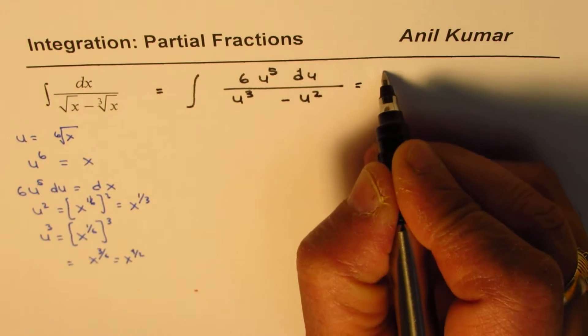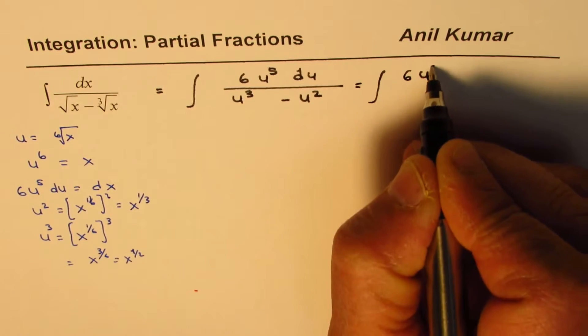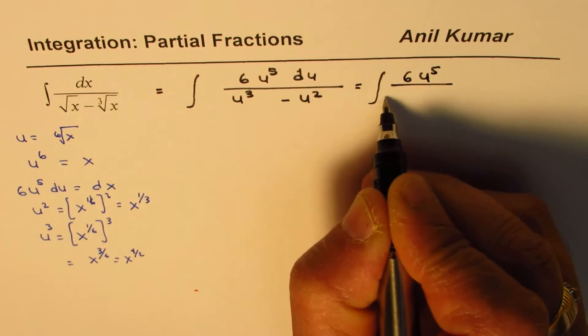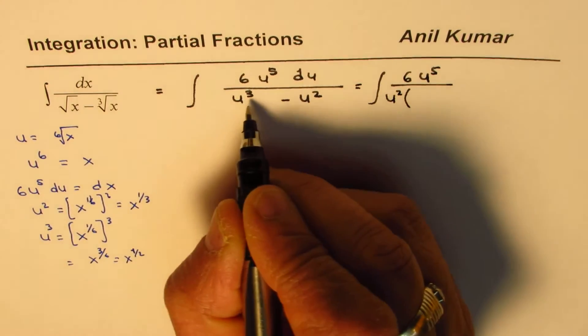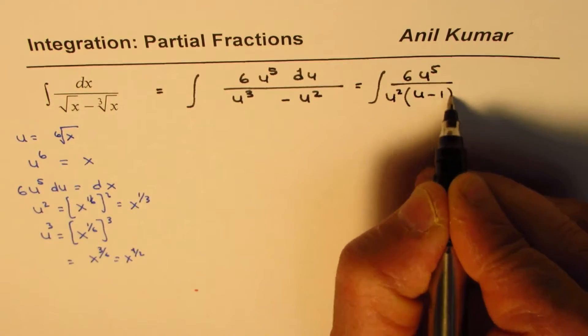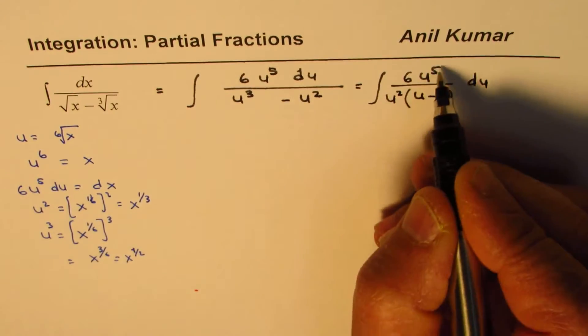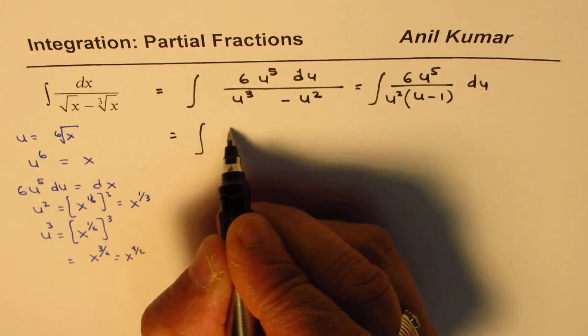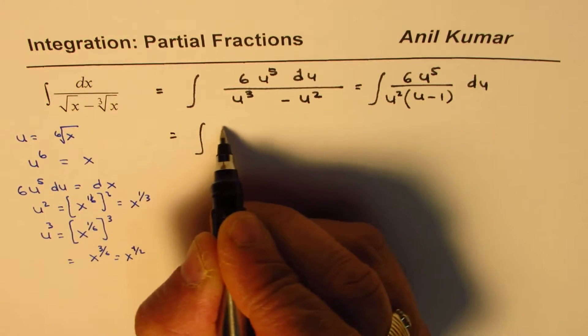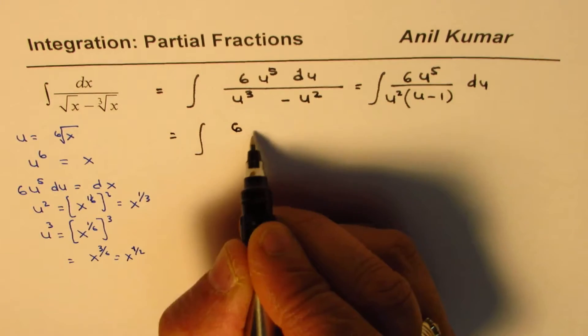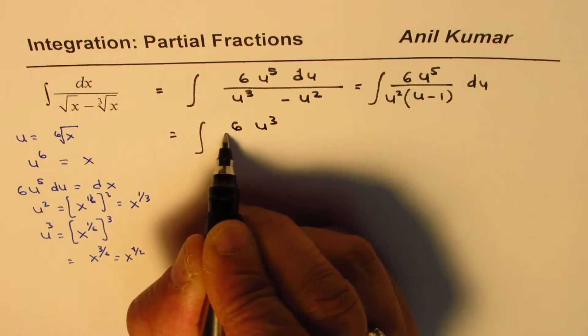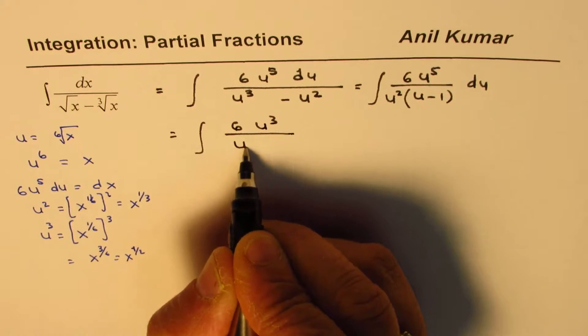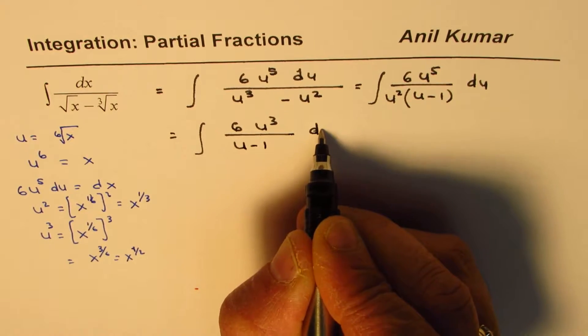So what we will do at this stage is we have 6 u to the power of 5. I'll take u square common. And so we have u minus 1 du. Now, this could be written as integral of 6, we can take 6 outside. 6 u cube over u minus 1 du. So du.